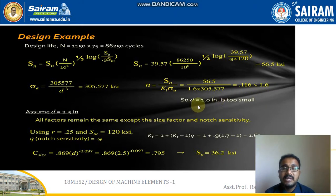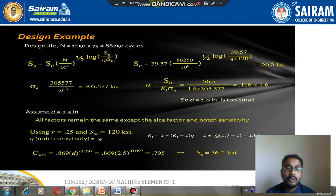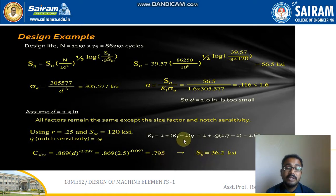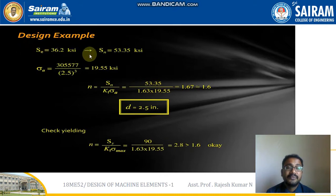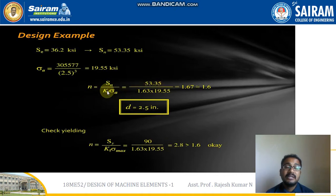After substitution and simplification, the factor of safety comes out to 0.116, which is less than 1.6, so d = 1.0 inch is too small. Assuming d = 2.5 inches — all factors remain the same except the size factor and notch sensitivity. Using R = 0.25 and S_u = 120 ksi, Q = 0.9, giving K_f = 1.63. C_size = 0.795.